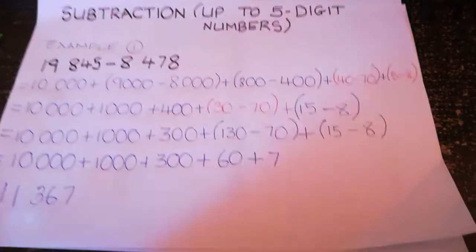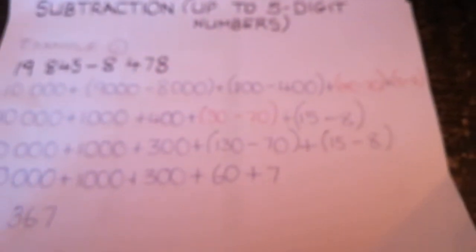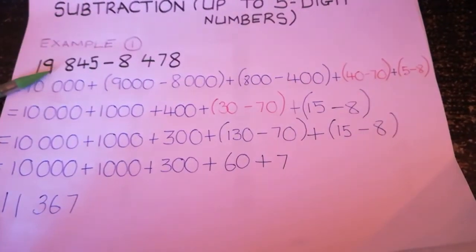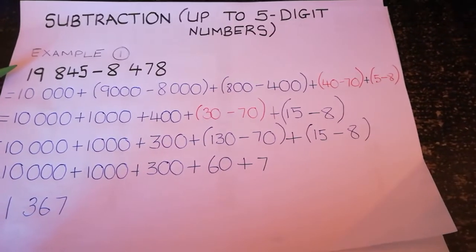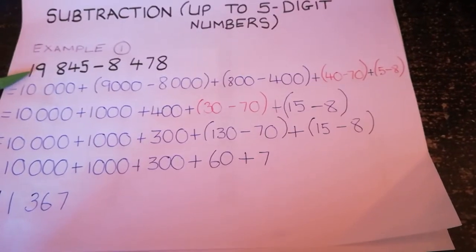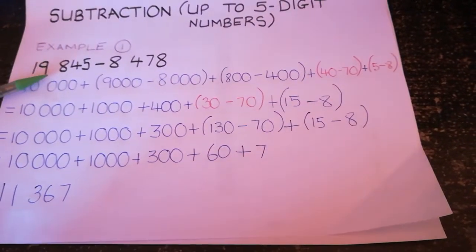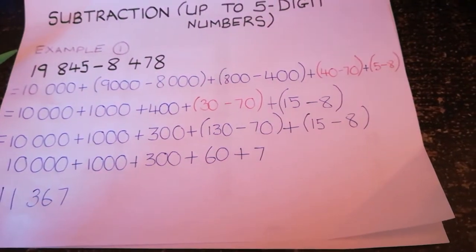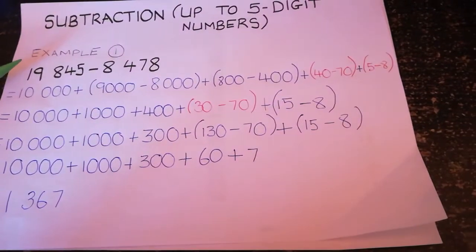The first thing that we are going to do is break up these numbers into their different place values. We're going to break up the 10,000s, the thousands, the hundreds, the tens, and the units. Let's begin.